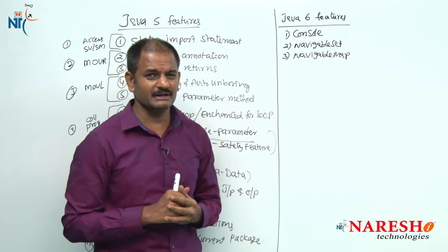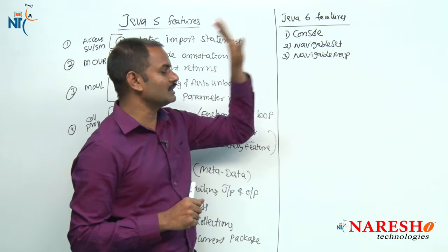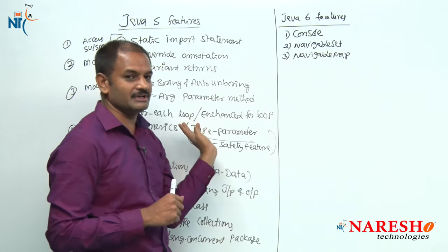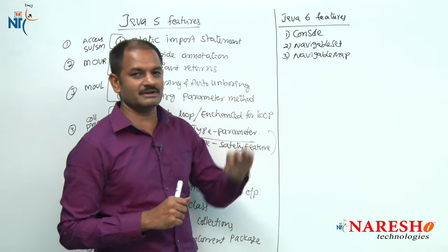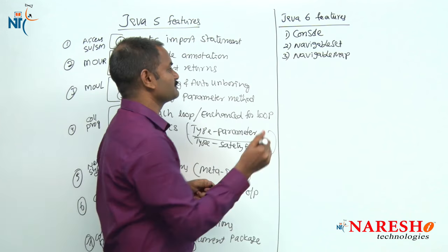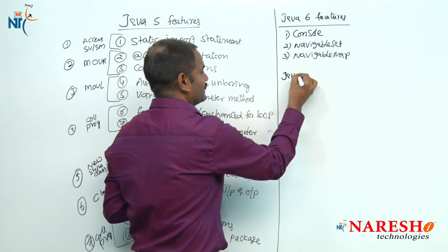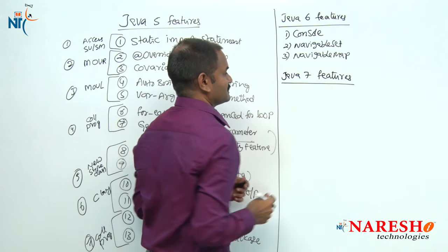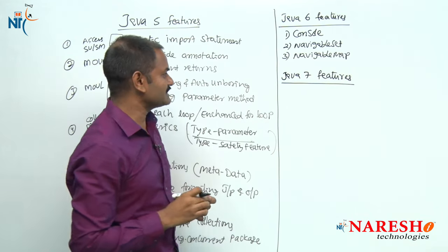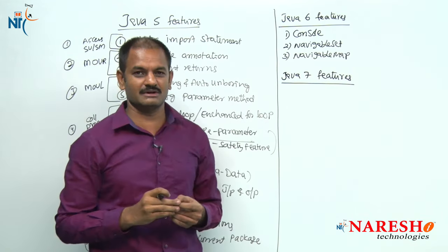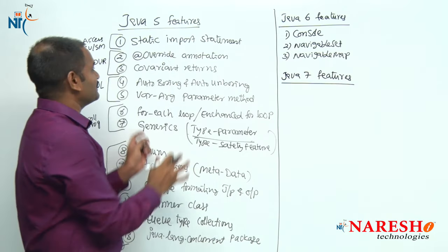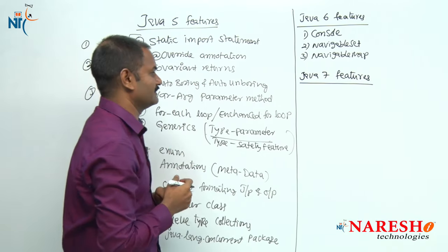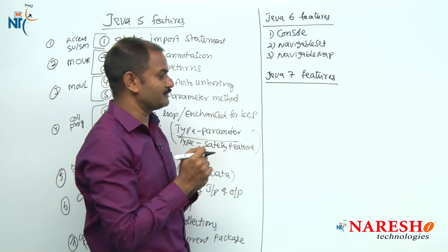From Java 6, these three classes are sufficient to remember. Java 6's concentration was mainly on solving performance issues. Now let us move to Java 7, which is again very important. Java 7's concentration is on bug fixing of Java 5 features and adding some new features.